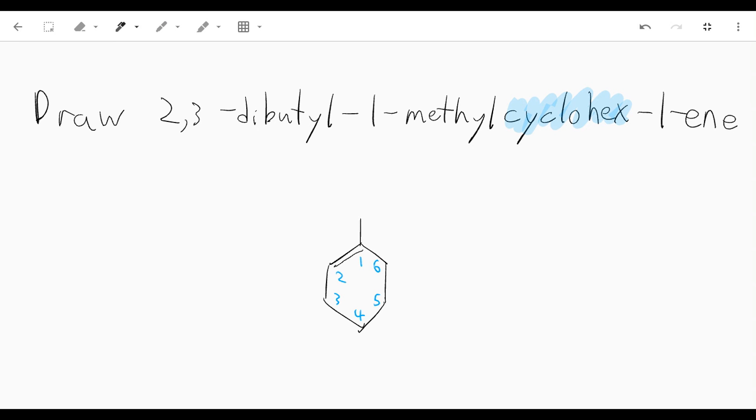We also have two butyl groups. We have one of them coming off of carbon two: one, two, three, four. And we have one of them coming off of carbon three: one, two, three, and four.